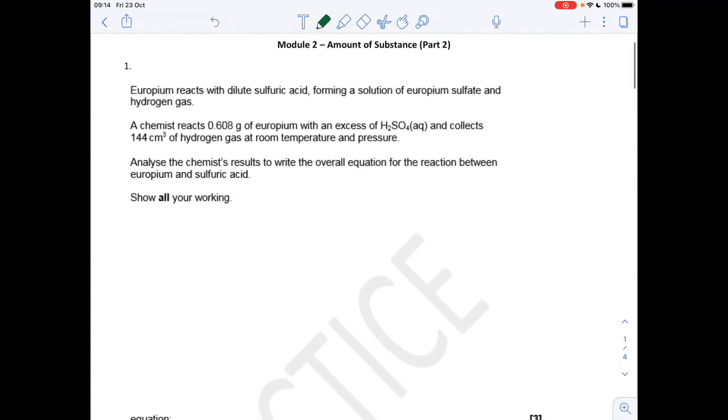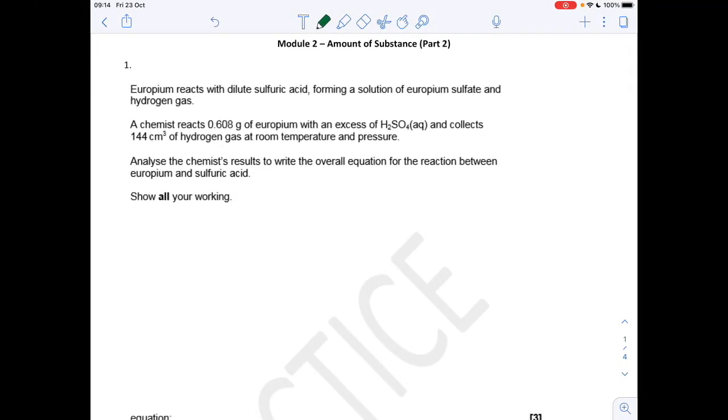Okay so the first question is quite a tricky one actually. Europium reacts with dilute sulfuric acid forming a solution of europium sulfate and hydrogen gas. So we're given some quantities of europium and we're given the amount of volume of hydrogen gas that's produced at room temperature and pressure and we've got to come up with the overall equation for this reaction.